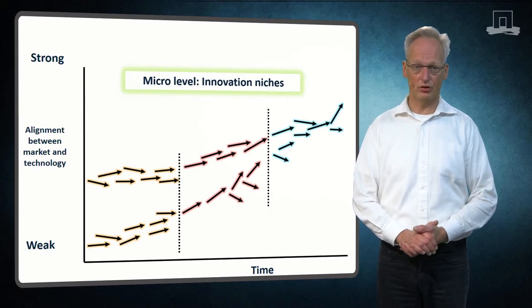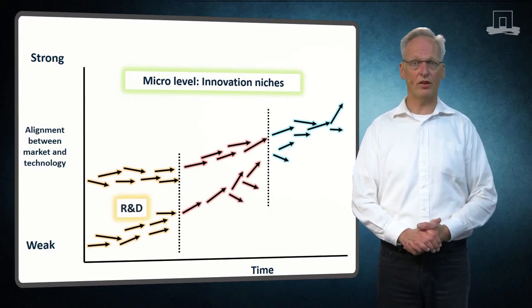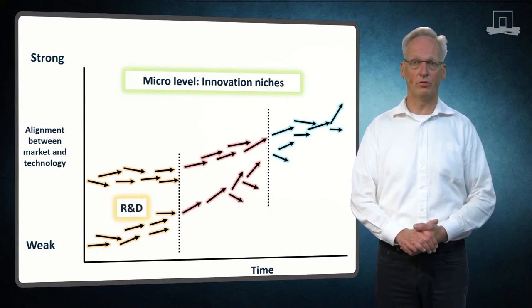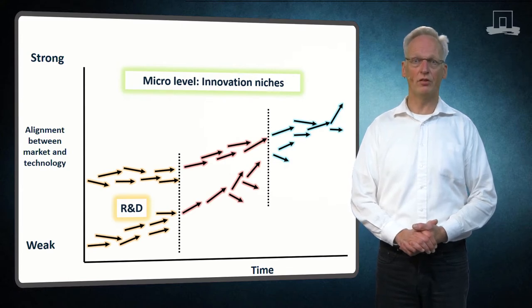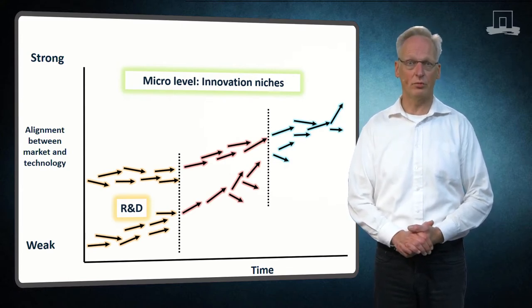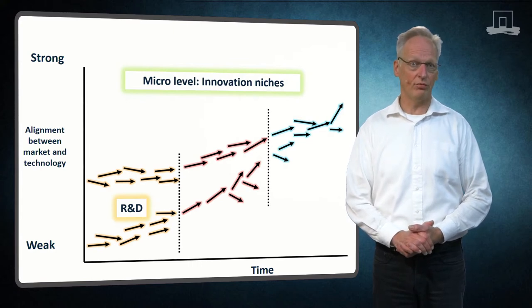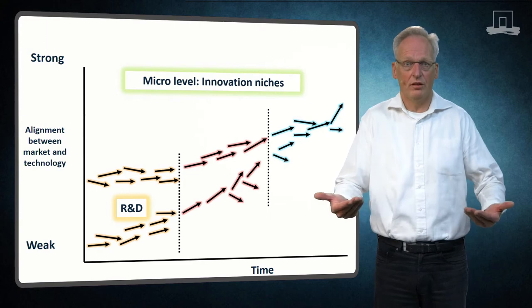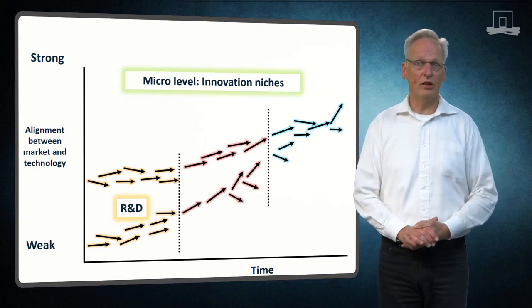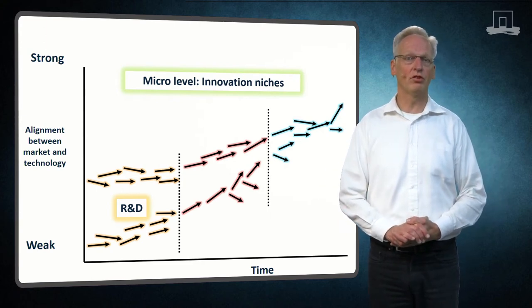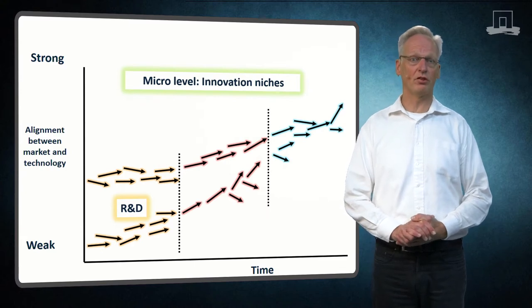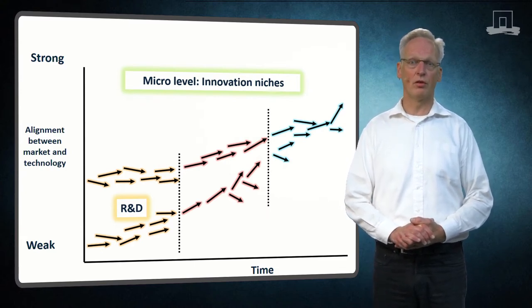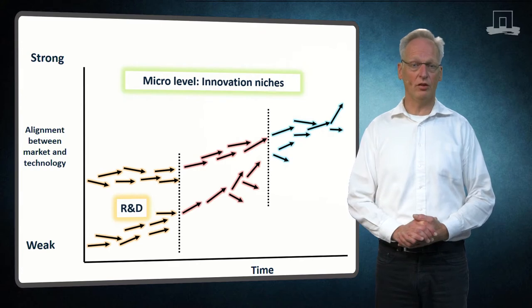Bottom left is the R&D niche. Protect the space with research activities. Such a niche may be created on the basis of future expectations, and there is no immediate market value. Alignment between the market and technology is actually weak. The R&D niche for PLA concerns, for instance, the selection of suitable production processes, the establishment of yields, patenting, purification, etc.